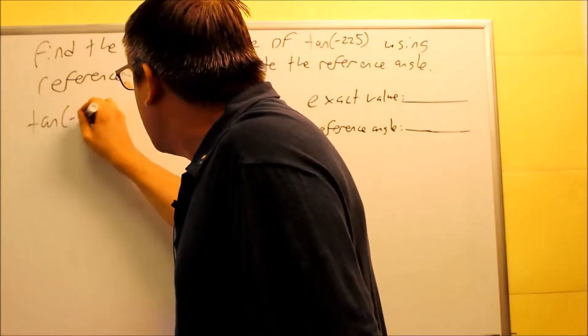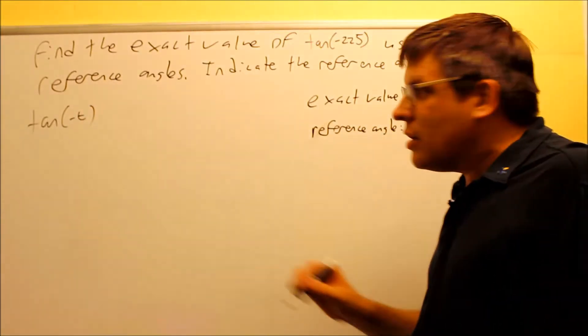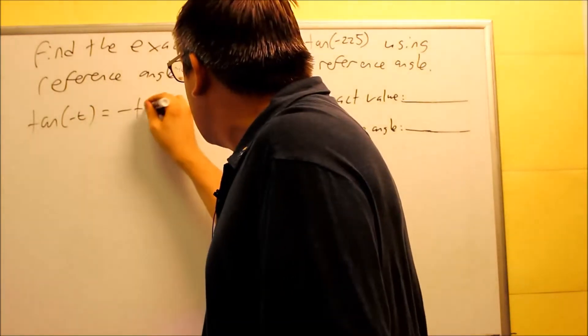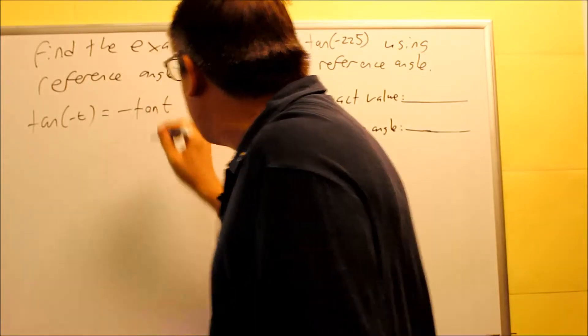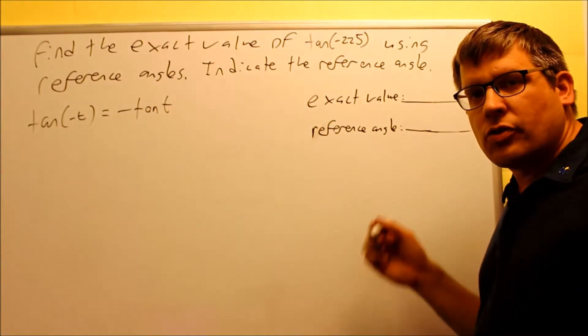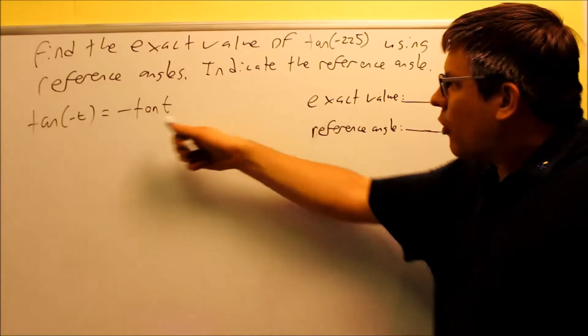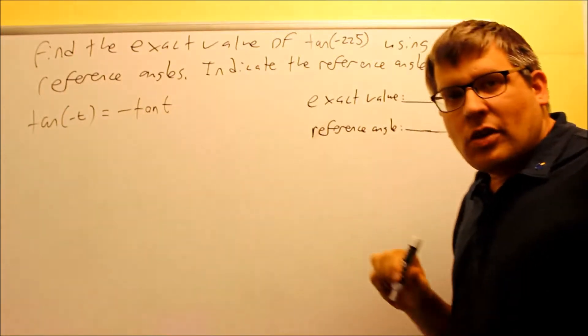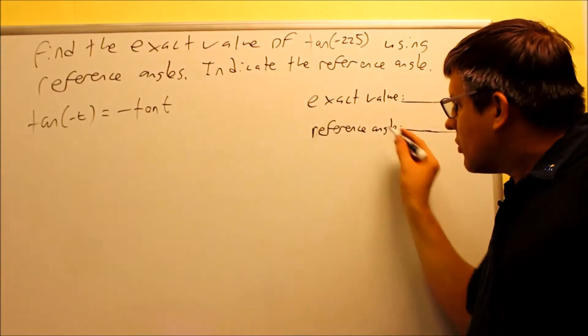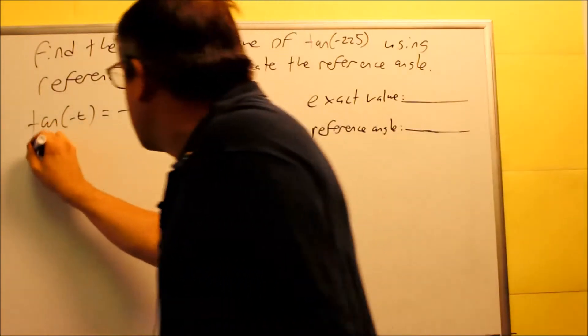For tangent of negative t, the even-odd property is tan(-t) equals negative tan(t). This is the correct formula you would want to use for this particular problem. This will allow me to rewrite this as a positive angle to make it easier to use for reference angles.